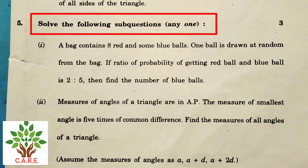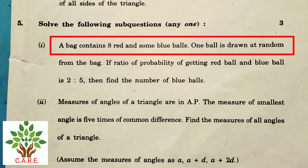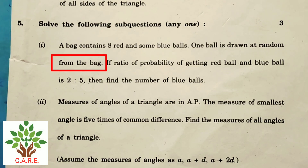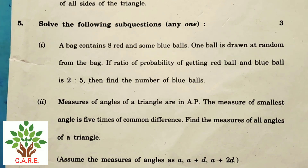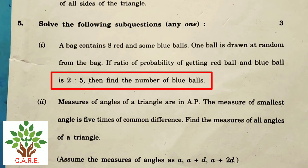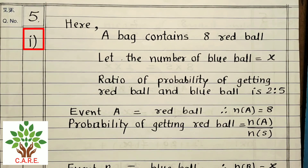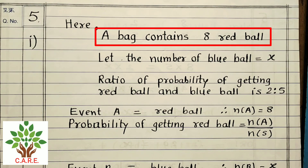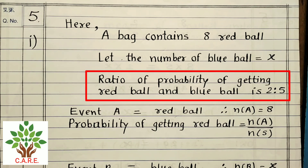Question 4: Solve the following sub-questions, any one, 3 marks. Question 1: A bag contains 8 red and some blue balls. One ball is drawn at random. If the ratio of probability of getting a red ball to a blue ball is 2:5, find the number of blue balls. Let the number of blue balls = x.